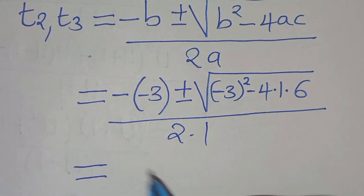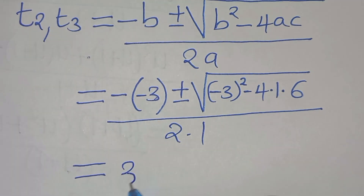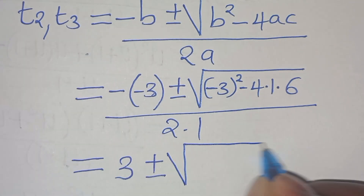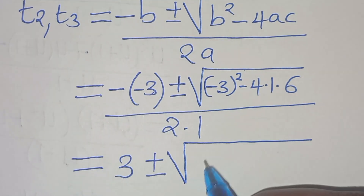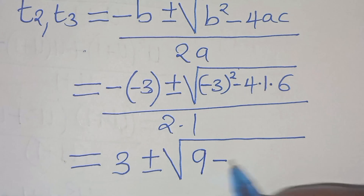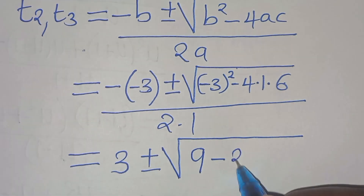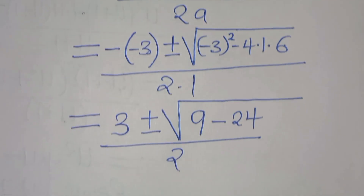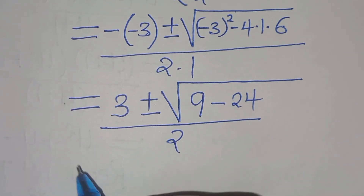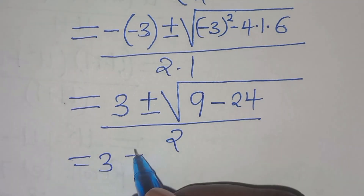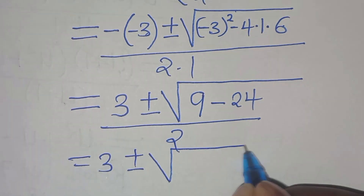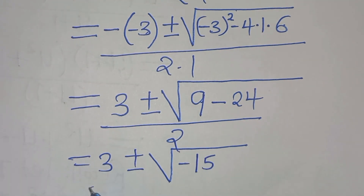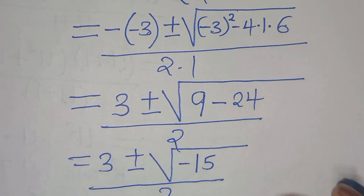Simplifying: 3 plus or minus the square root of 9 minus 24, which is the square root of minus 15, all divided by 2.